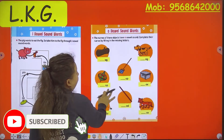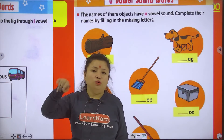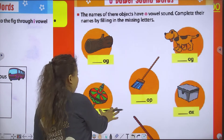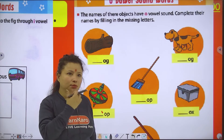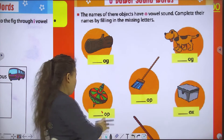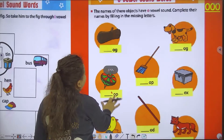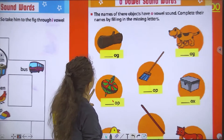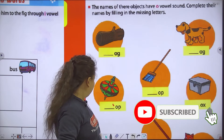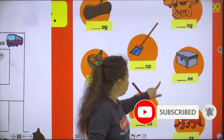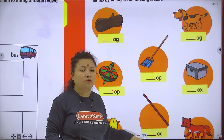Now next is O vowel sound words. When we read, when we learn, when we write O vowel sound words, which sound does it have? O! My mouth looks like O — we make an O shape. So here are some pictures, but the names of the pictures are not complete. So all pictures have the O sound.